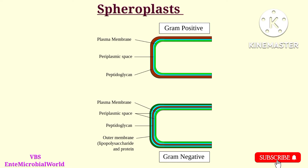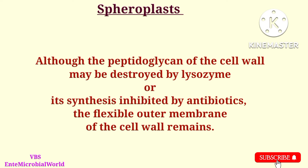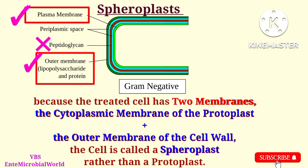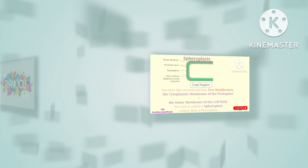We have already seen that the cell walls of gram-negative bacteria differ from those of gram-positive bacteria by possessing an outer membrane. Although the peptidoglycan of the cell wall may be destroyed by lysozyme or its synthesis inhibited by antibiotics, the flexible outer membrane of the cell wall remains because the treated cell has two membranes: the cytoplasmic membrane of the protoplast plus the outer membrane of the cell wall. The cell is called a spiroplast rather than a protoplast.